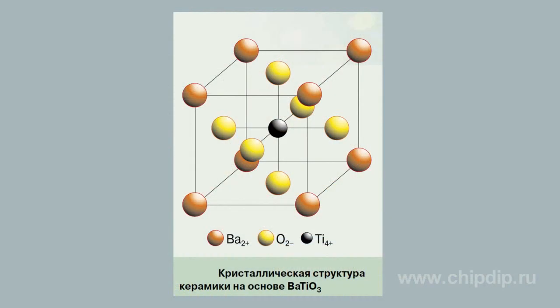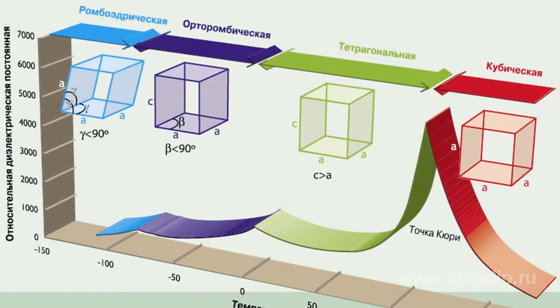The highest spontaneous polarization may be observed in barium titanate. Barium titanate has a cubic structure at temperatures above the Curie point. If the temperature is below the Curie point, one axis is slightly spread and the other is slightly stretched, and the structure becomes tetragonal. In this case, the Ti4+ ion is displaced axially from the crystal center and polarization occurs.